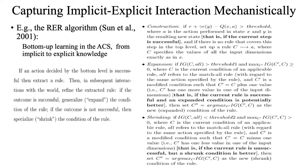Bottom-up learning is actually very important. The RER algorithm captures bottom-up learning in the action-centered subsystem. The basic idea is that if action at the bottom level is successful, one extracts a rule. Then, in later interactions with the world, one refines the extracted rule: if the outcome is successful, the rule may be generalized; if the outcome is not successful, then the condition of the rule may be revised or specialized. These operations are guided by some statistical measure.